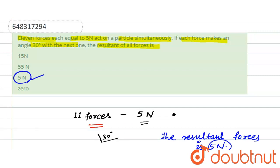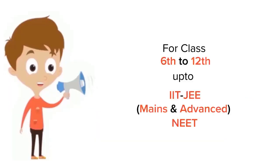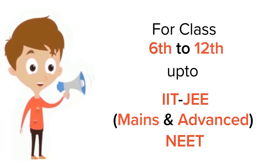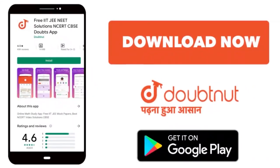Option number C, option number 3 is the correct answer. The resultant of all forces is 5 newton. Thank you. For class 6 to 12th, IIT-JEE and NEET level, trusted by more than 5 crore students, download Doubtnut today.